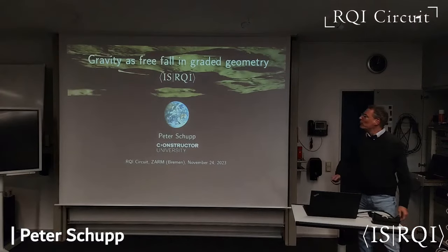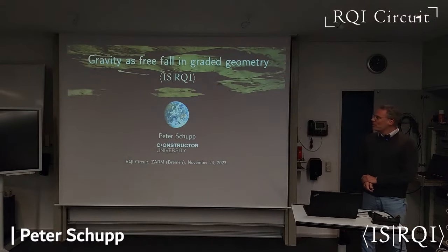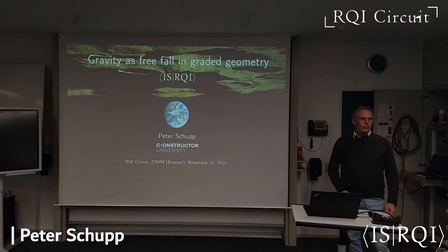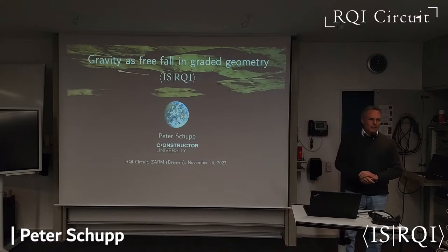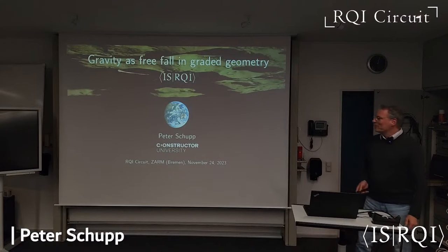The topic is gravity as free fall in graded geometry. The picture shows Earth free falling in the gravitational potential of the Moon and the Sun. The research I'm going to talk about is a side product of research on trying to find effective gravity actions in string theory. There was a lot of mathematics involved, but there were some side products, and I'm going to talk about these.